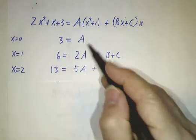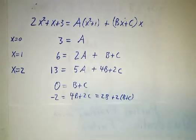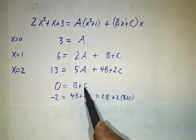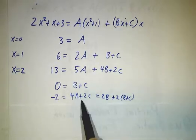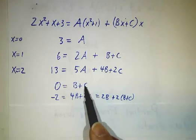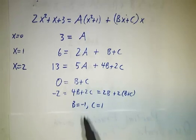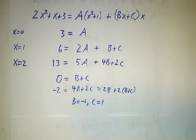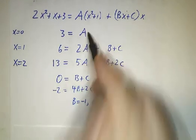And you plug in the value of a that we already know, and we get these two equations become 0 is b plus c and negative 2 is 4b plus 2c. And then you can subtract twice this equation from this equation, and you get that b is negative 1 and c is 1. And we already had that a was 3.